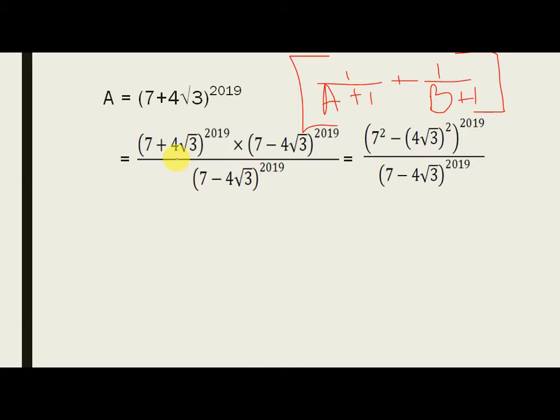Now, why did I do that? Because you see the beauty of this question. Here you have 7 plus 4 root 3. Here you have 7 minus 4 root 3. If you multiply both of them because the power is same, so you can multiply them.